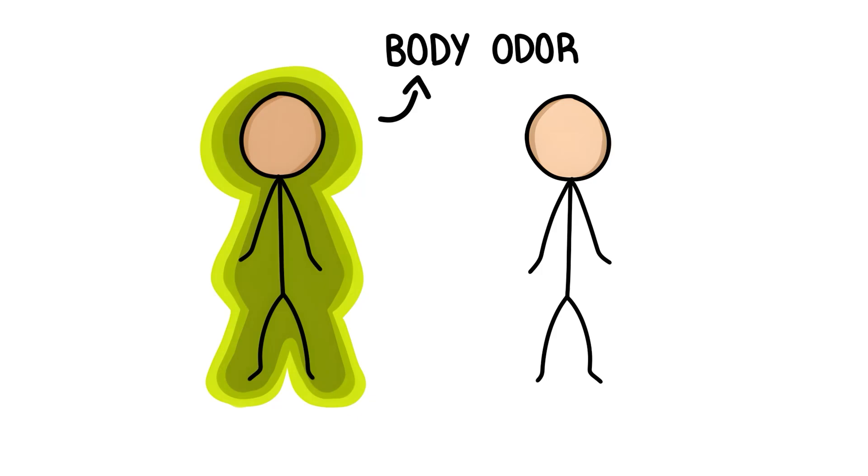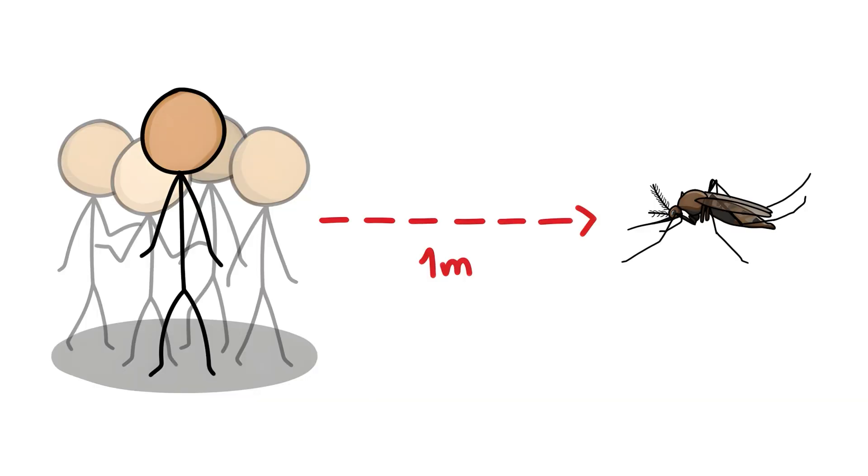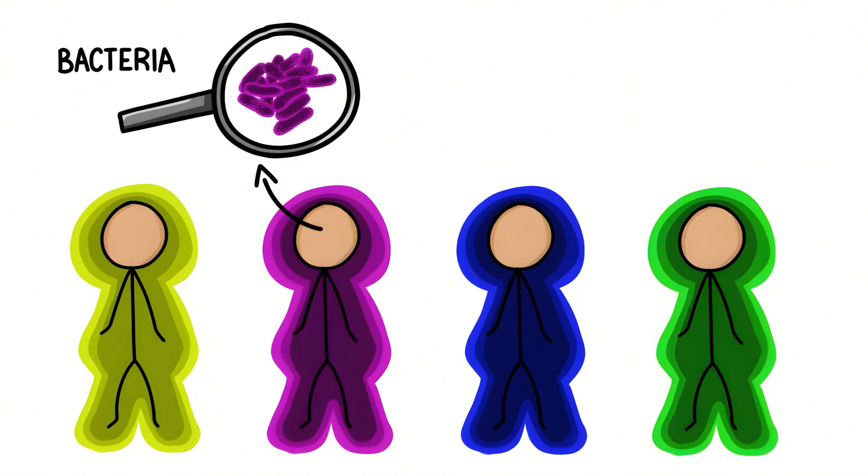It's probably because of your body odor. If a mosquito is at a distance of about one meter from us, it is the individual body odor of a person that the mosquito uses to choose its victim. This specific odor depends above all on the bacteria that are found on our skin.